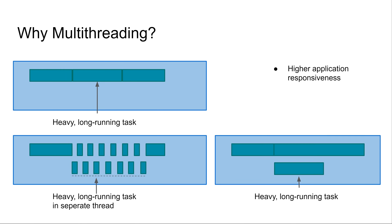A third benefit of multi-threading is higher application responsiveness as perceived by the user. Imagine a GUI application where the user clicks a button, which starts some processing and then launches a long-running background task. When the task finishes, the thread goes back to updating the UI and responding to further user input. During that period, the thread is busy executing the long-running task and cannot respond to user input or update the interface, so the application appears unresponsive.